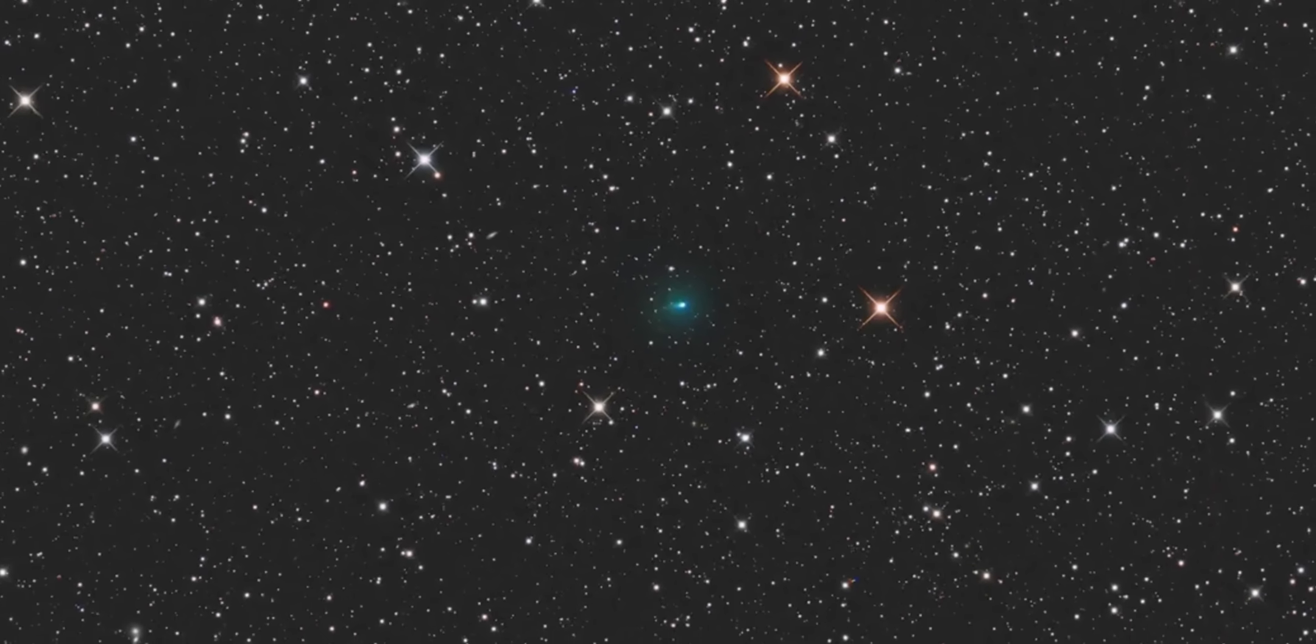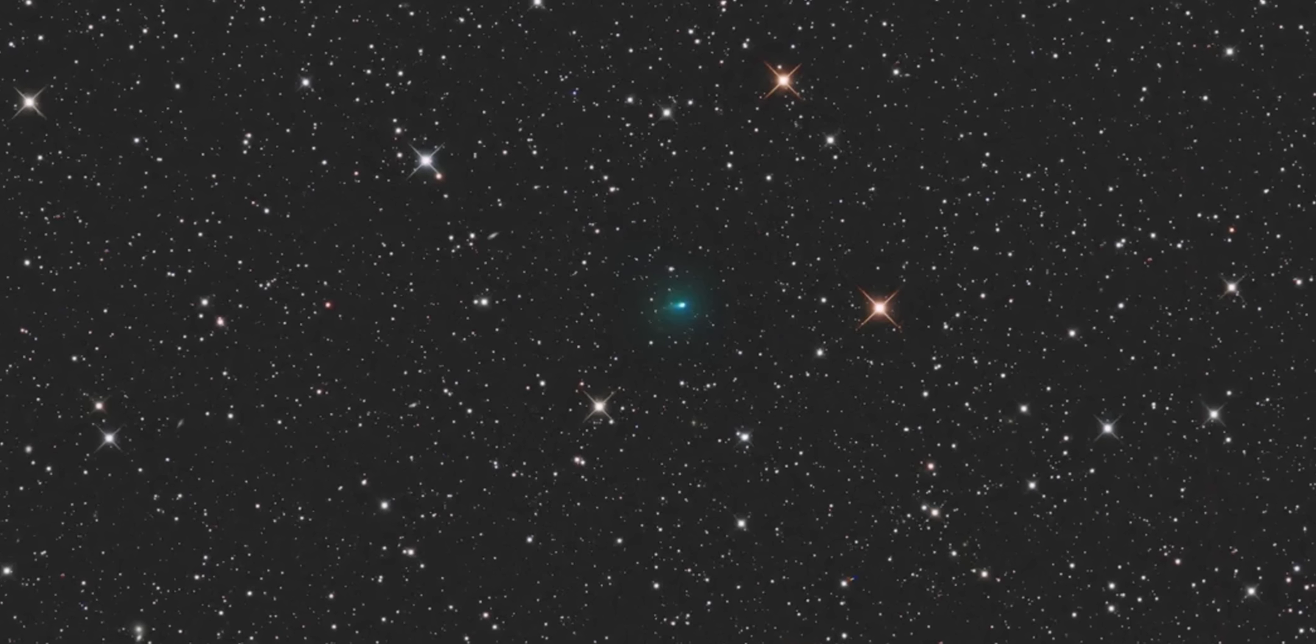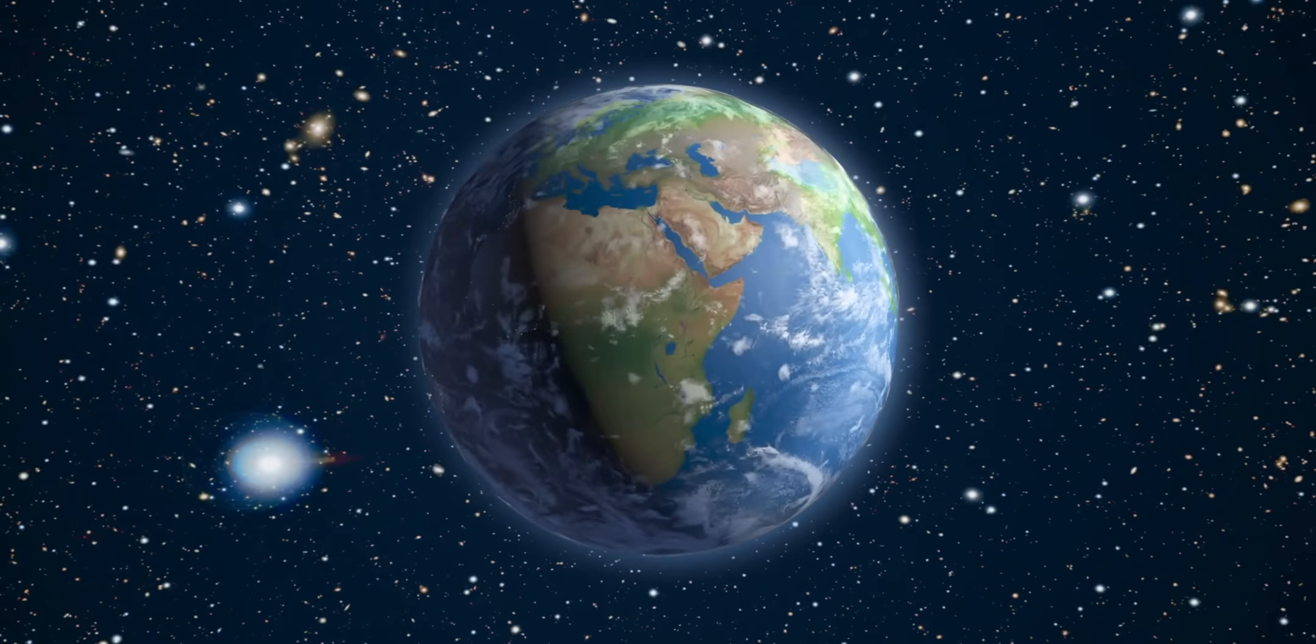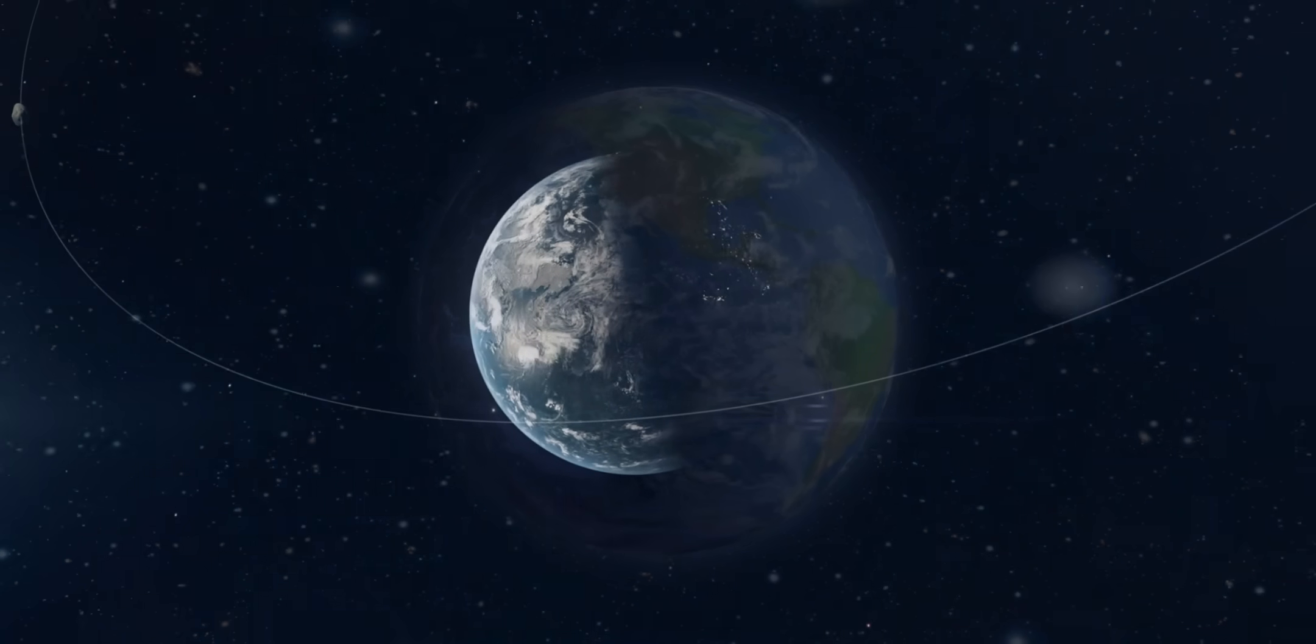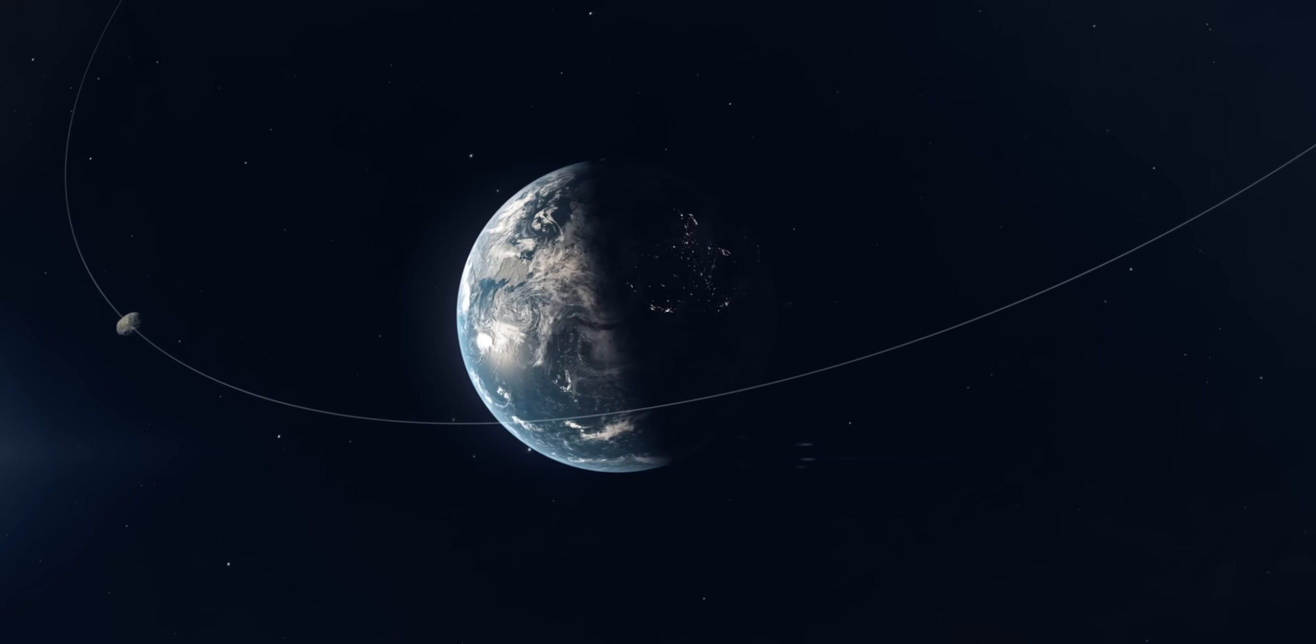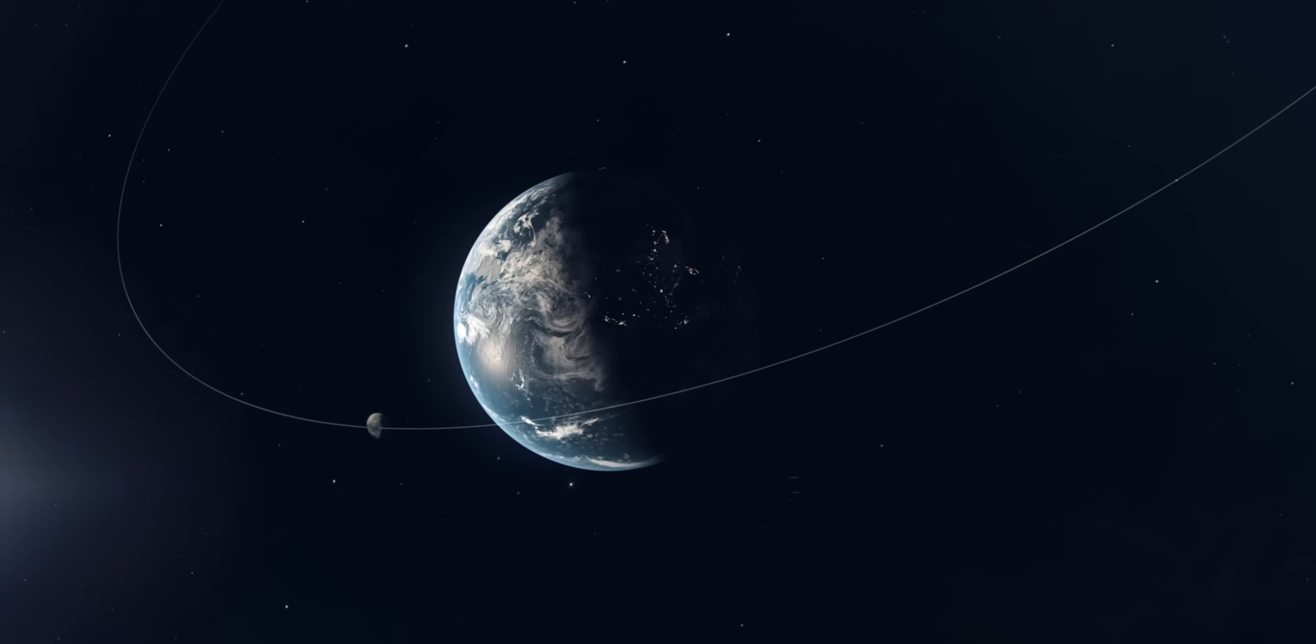That is why even the slightest whisper of changed direction chills every observatory on Earth. Because even the smallest deviation today, multiplied across millions of miles, could reshape tomorrow's trajectory. But here's the paradox. Current calculations say Earth is safe. Atlas will pass at least 170 million miles away, nearly twice the distance from Earth to the Sun. Too far to strike us. And yet the questions remain.